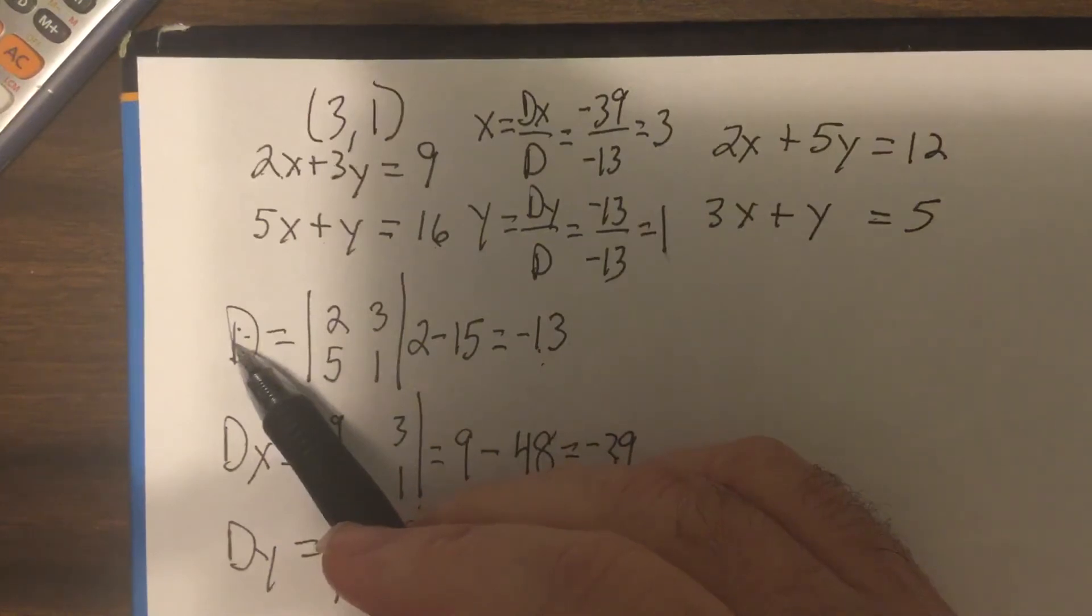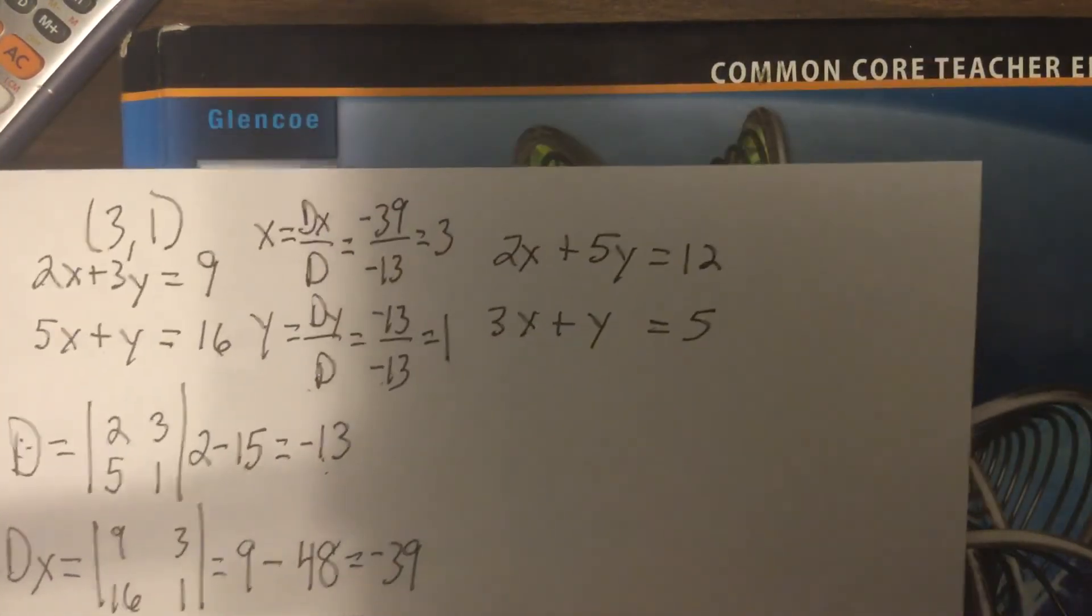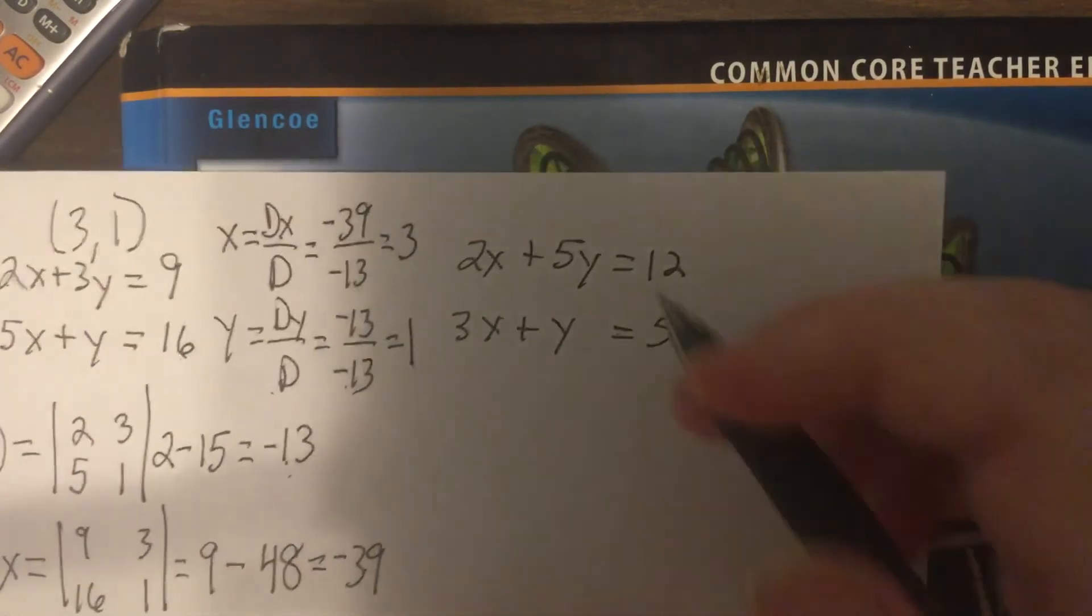Now, if my big D is ever 0, then I can't do this because you need to have D on the bottom. Of course, big D stands for the big determinant. The coefficient matrix is what they call it. So this one,